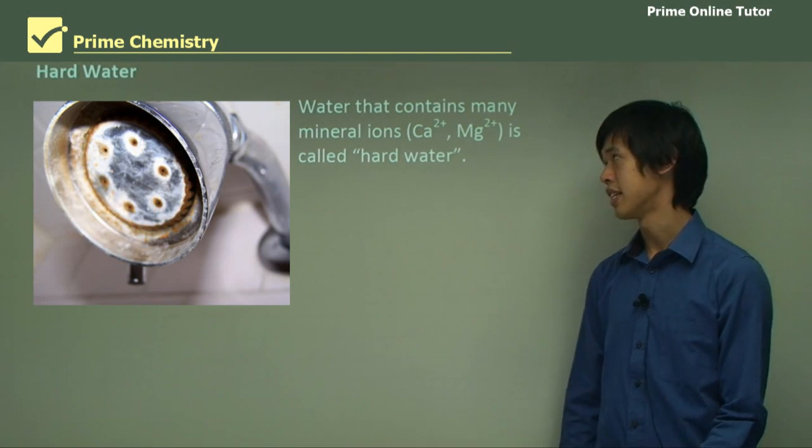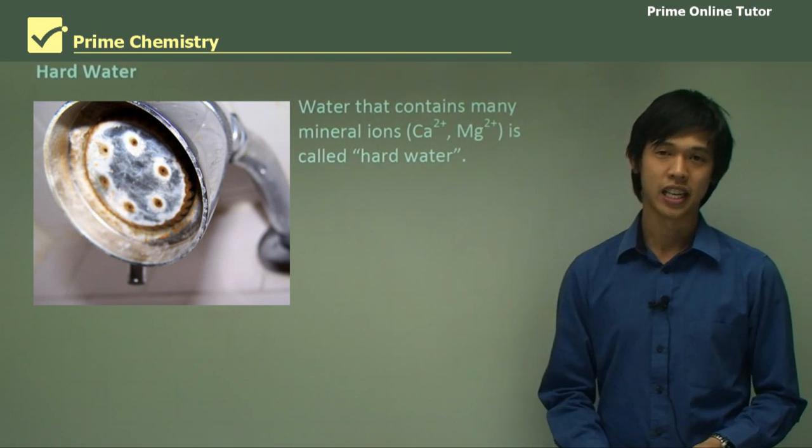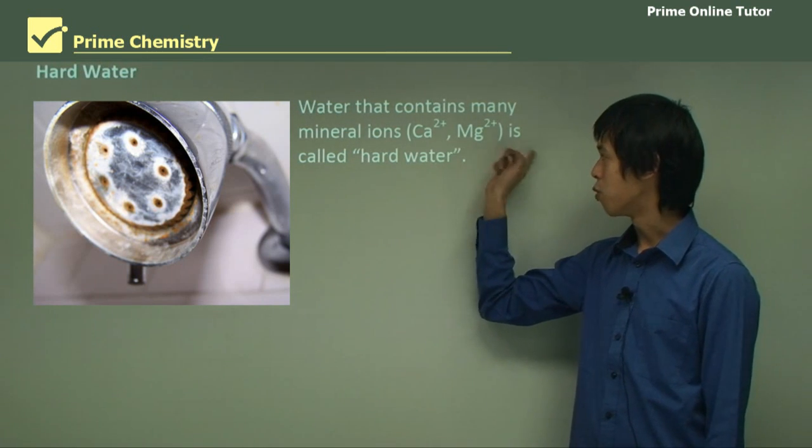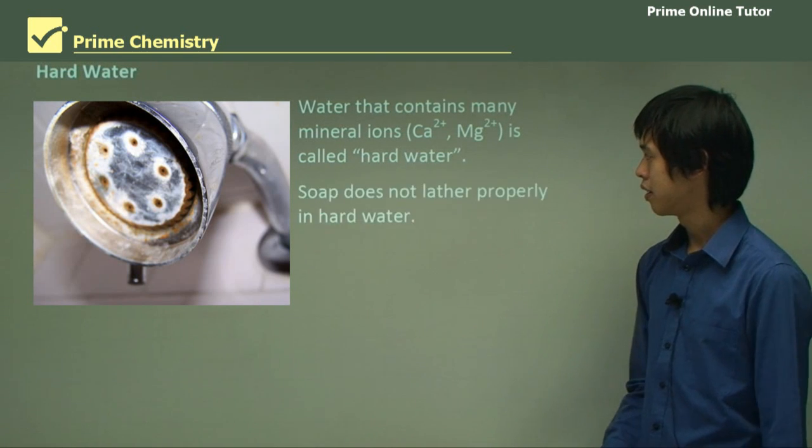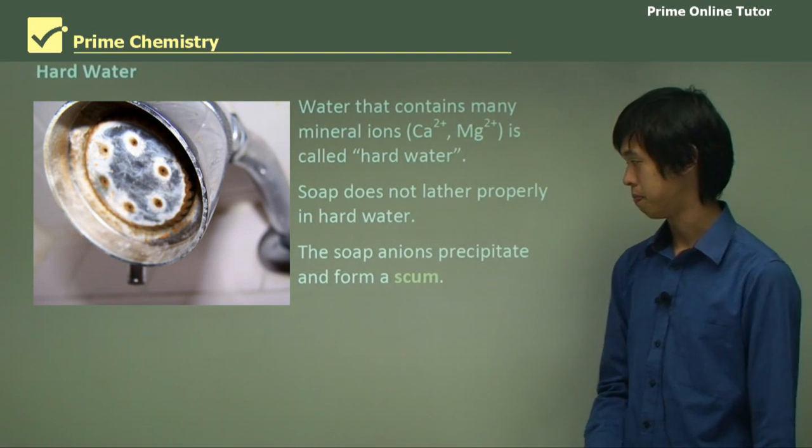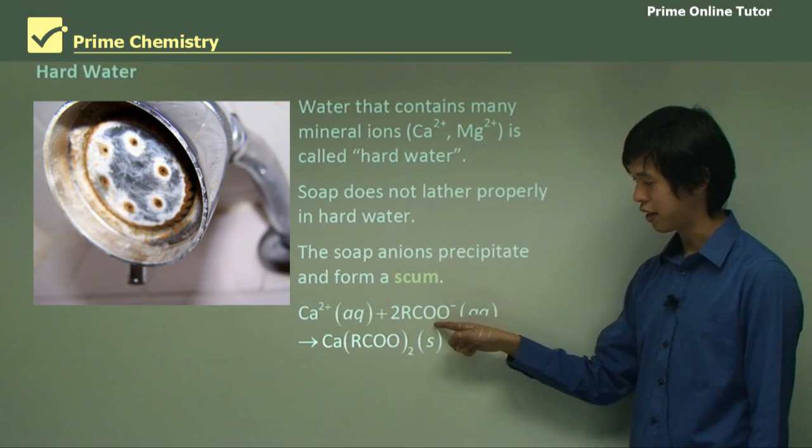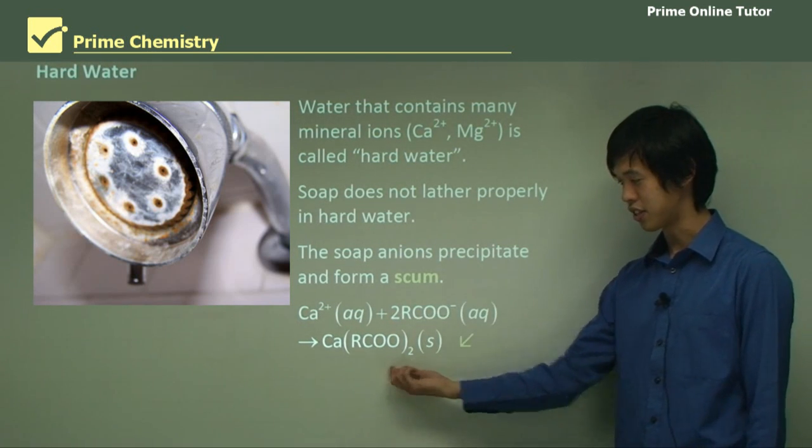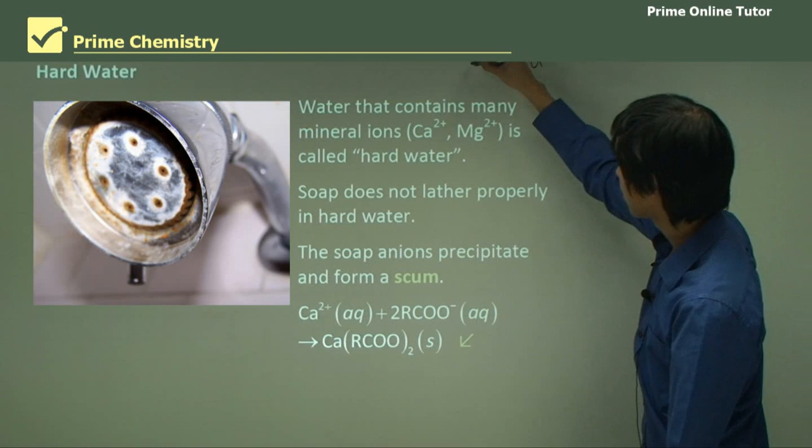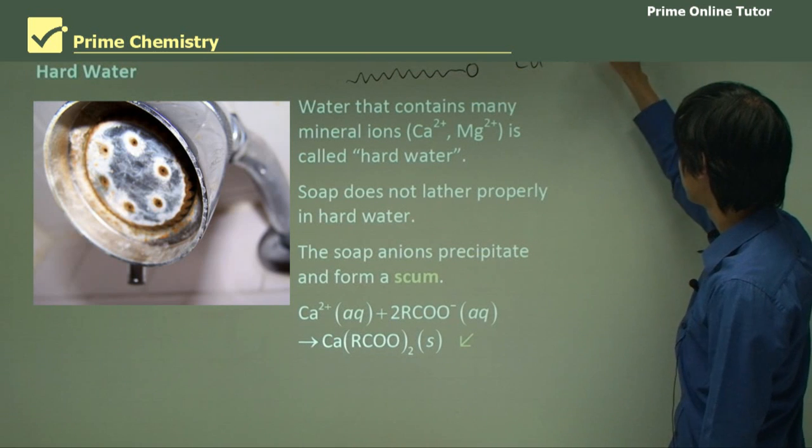Hard water. Adelaide has a problem—Adelaide has very hard water, and so soap doesn't quite work as well there as it does here in Sydney. Water that contains many mineral ions, calcium or magnesium, is called hard water. Soap doesn't lather properly in hard water. The soap anions precipitate and form a scum. Here we have Ca2+ plus two of these soap anions gives you this solid Ca.